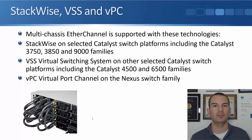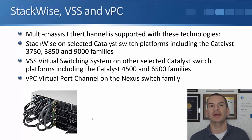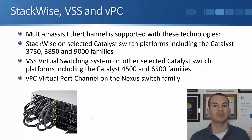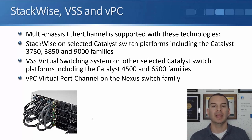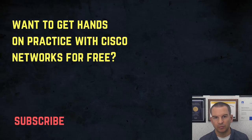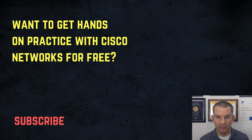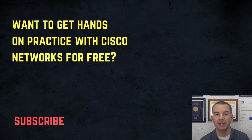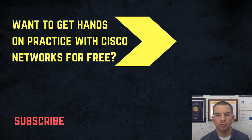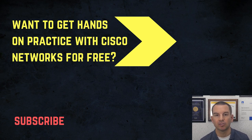At the CCNA exam level, Cisco expects you to know a broad overview of these technologies, but not how to configure them. If you go on to CCNP level or another CCNA track like Data Center, you'll learn how to configure and monitor these technologies. Thanks for watching. If you want hands-on practice with Cisco networks for free, you can download the 400-page CCNA lab guide. Also check out the video about the CCNA course — it's the highest rated course online.